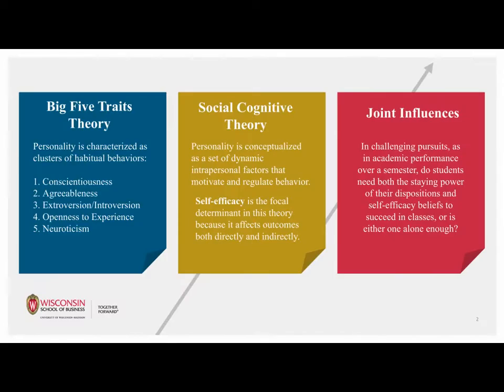In the Big Five Trait Theory, personality is characterized as clusters of habitual behaviors. In social cognitive theory, personality is conceptualized as a set of dynamic intrapersonal factors, and self-efficacy is the focal determinant in this theory. Juxtaposing these theories, we examine whether students need both the staying power of their dispositions and self-efficacy beliefs for academic performance, or if either one alone is enough.